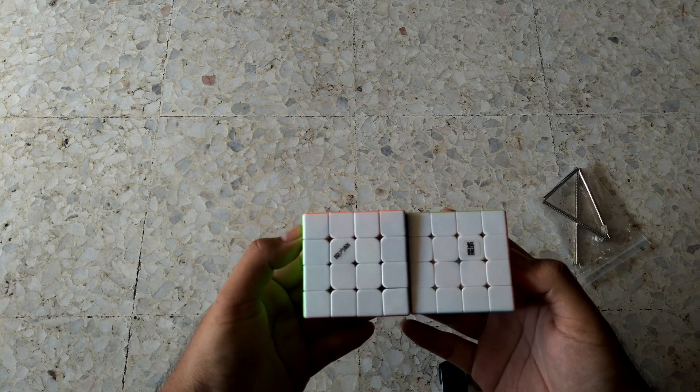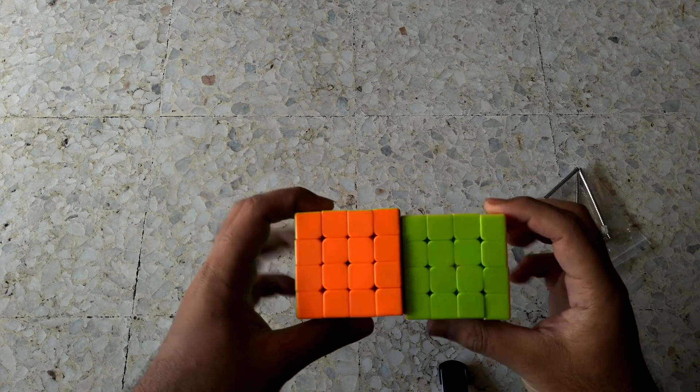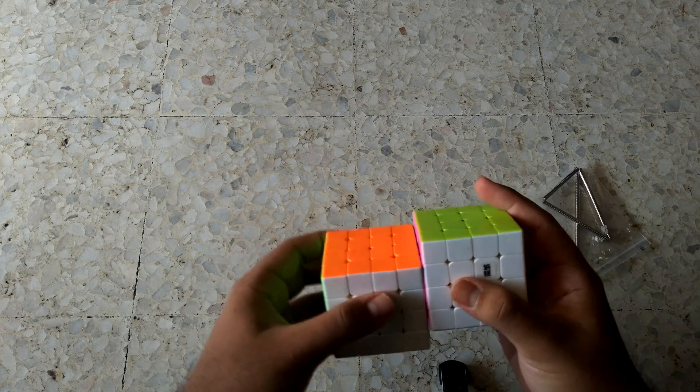Here I have two 4x4s. This one is a Wuku M and the other one is an Aosu Mini M magnetic. Both are magnetic.